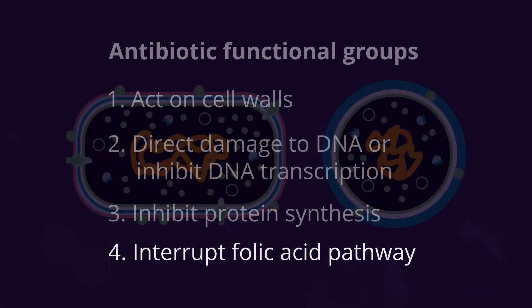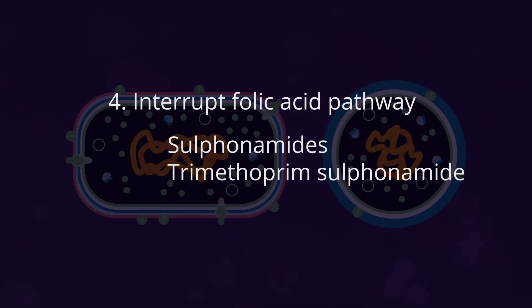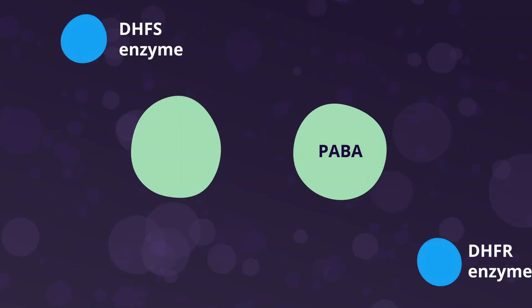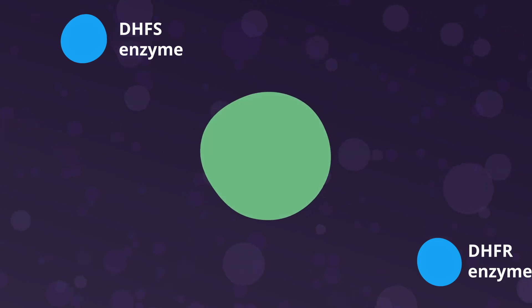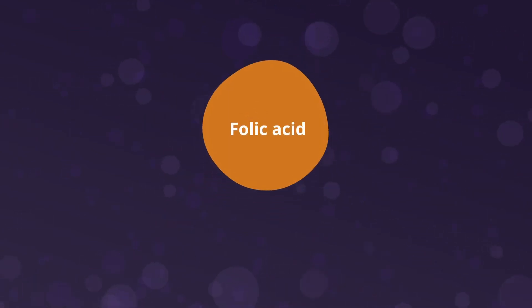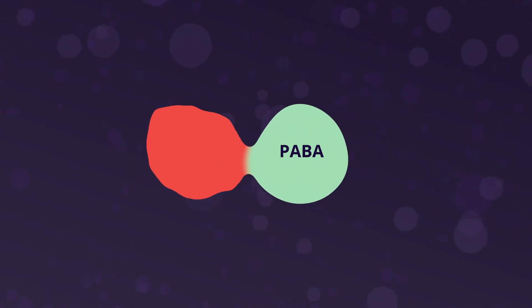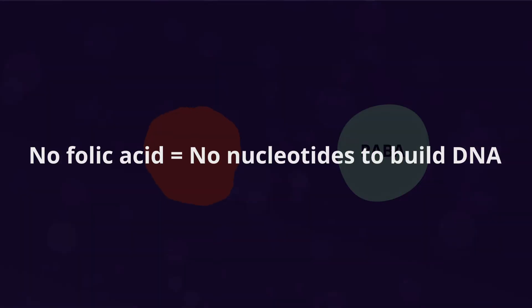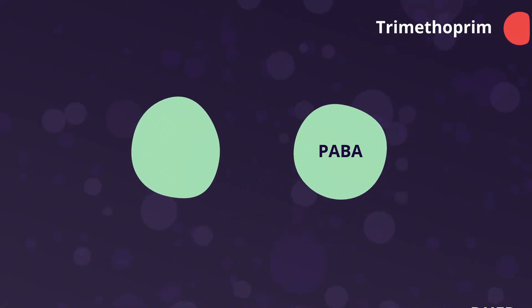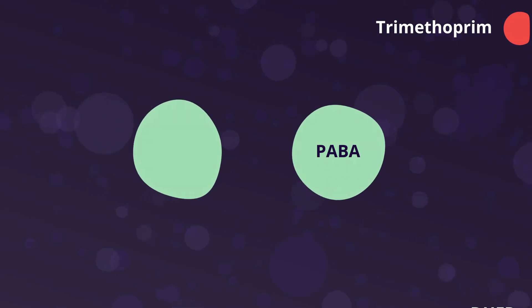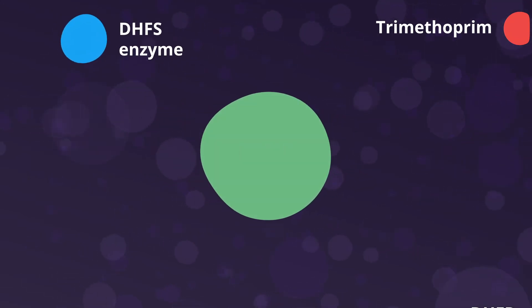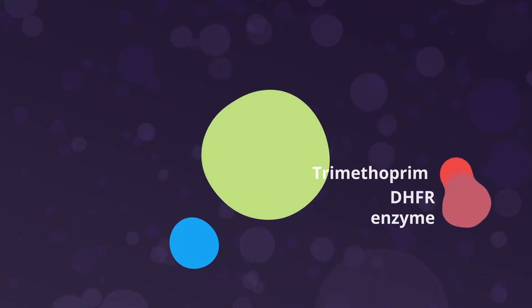The last group we're going to look at are the antibiotics that interrupt the folic acid pathway: the sulfonamides and potentiated sulfonamides. Most mammalian species get folic acid from their diet, but bacteria have to make their own. Sulfonamides act as a competitive antagonist to one of the key precursors in the folic acid pathway. Without folate, bacteria are not able to produce nucleotides, the building blocks of DNA. Trimethoprim is used concurrently to enhance the activity of sulfonamides, because it inhibits key enzymes in the folic acid pathway, creating a synergistic effect.